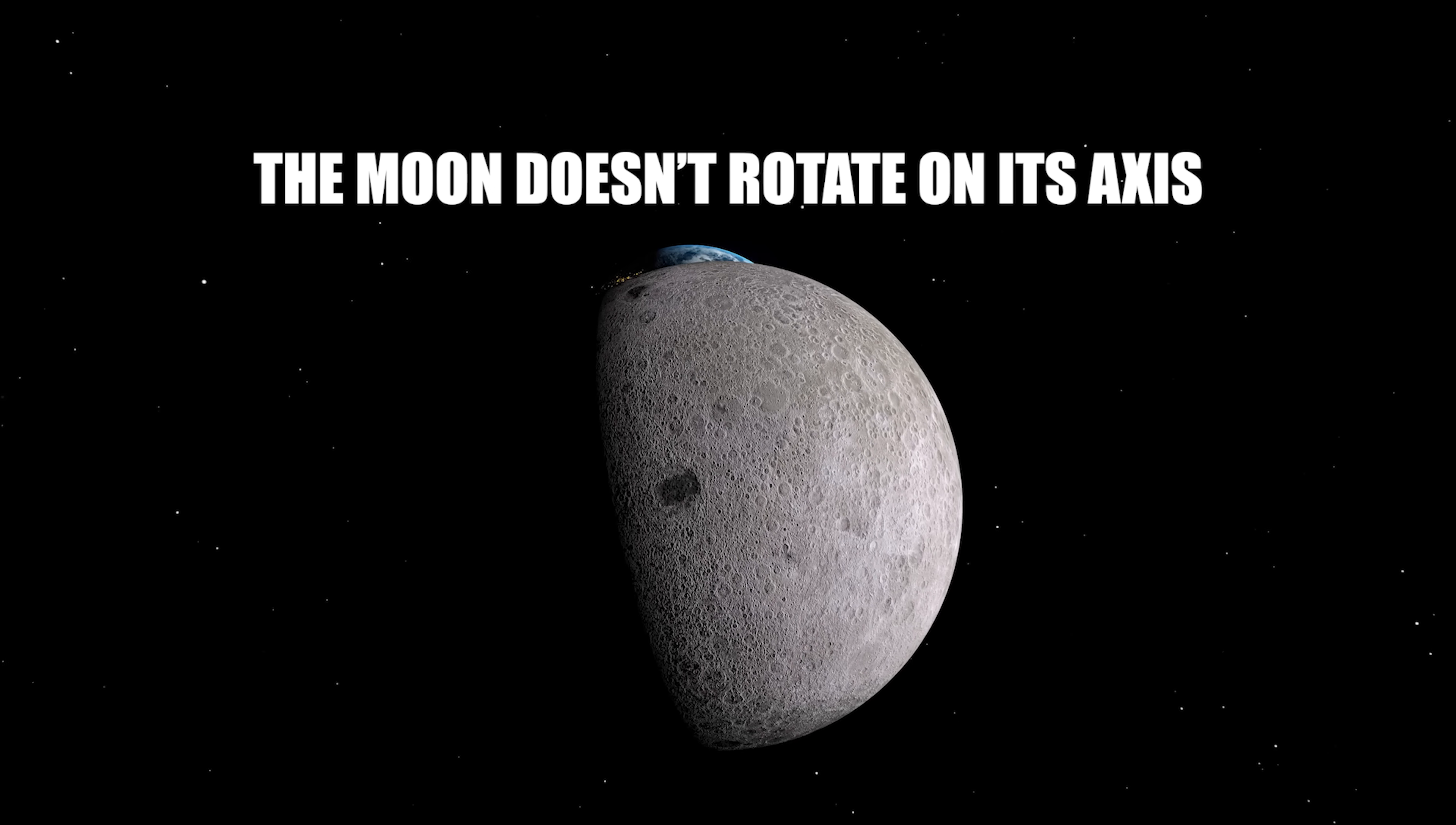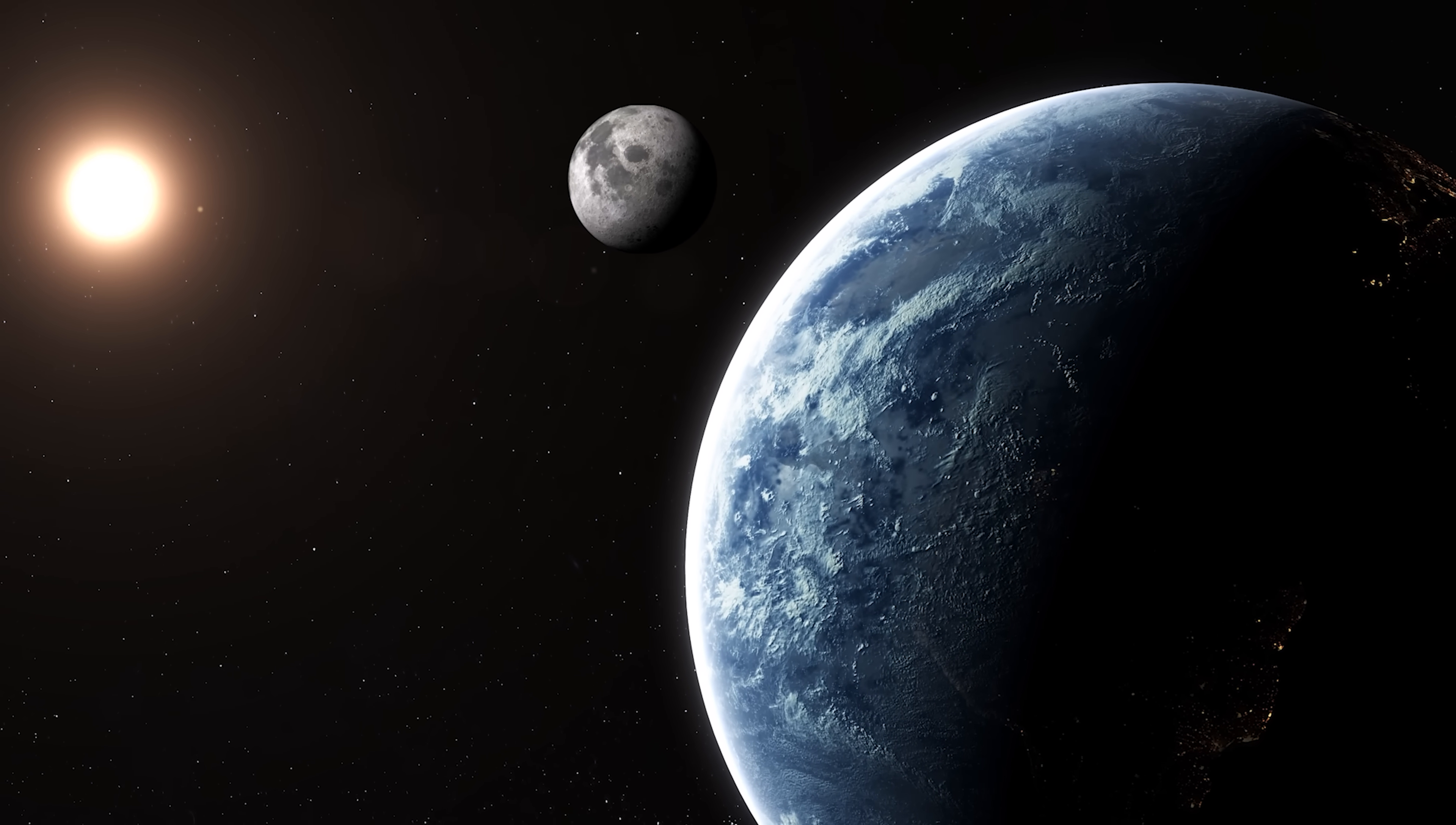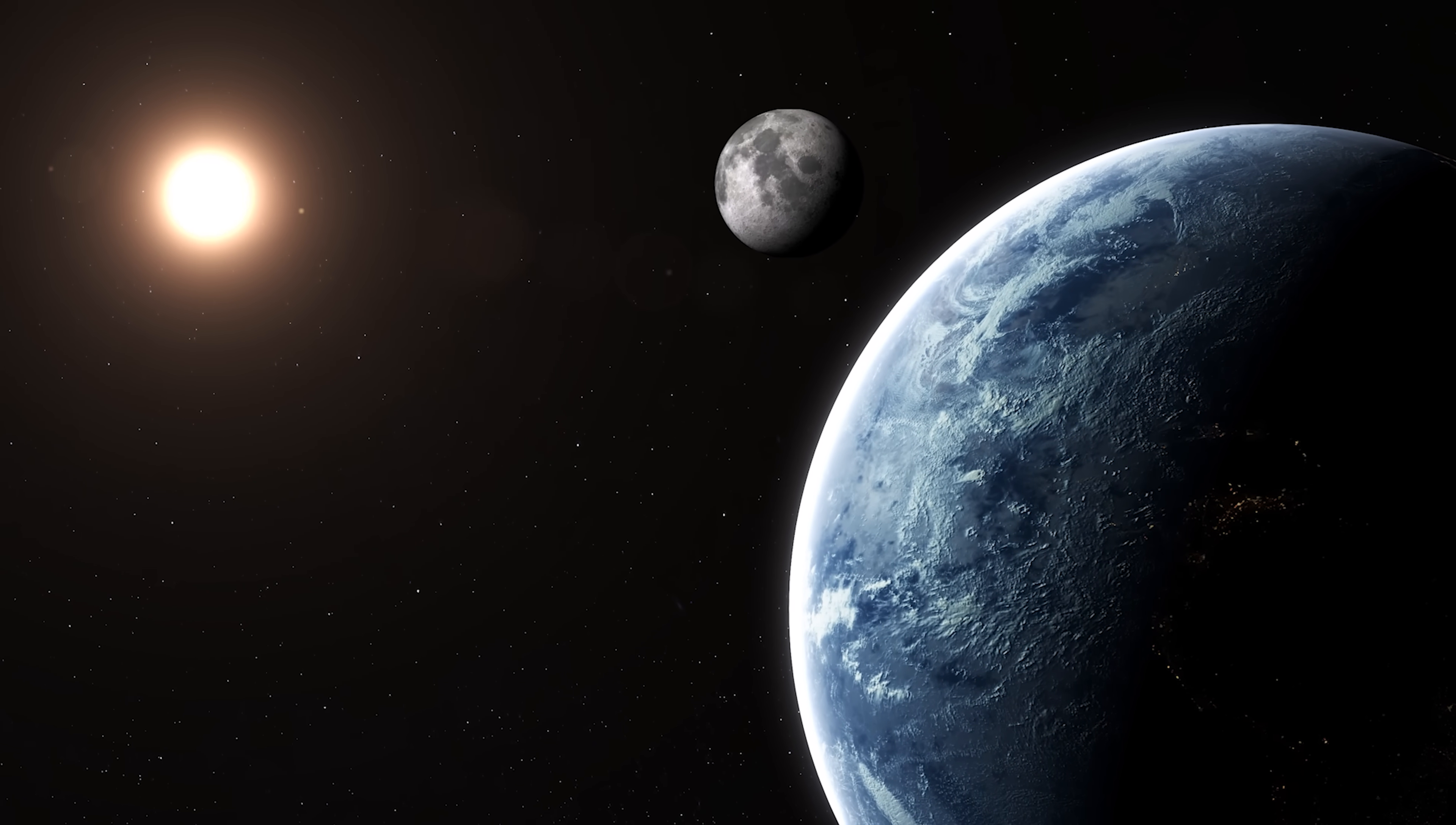The Moon doesn't rotate on its axis. The Moon always shows us the same face, so it doesn't rotate. This is a misconception that fools even many educated people. It seems logical. If it rotated, we should see different sides over time, right?